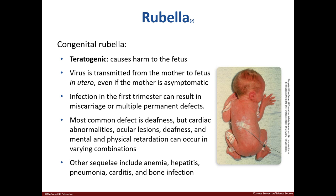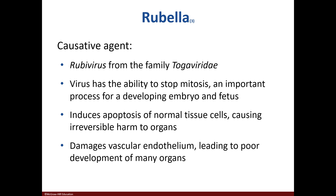Congenital rubella is passed to the fetus. The virus is teratogenic, and if it is transmitted during the first trimester, it can lead to miscarriage or defects. The most common sign is deafness, but other symptoms may also be present. The causative agent is the rubevirus. This virus can halt mitosis and induce apoptosis, which is why it is so harmful and potentially deadly to the fetus.